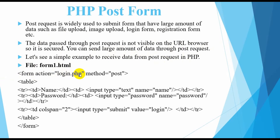Let's see a simple example. The form action is login.php and the method is equal to POST. We have a table with two rows: the first field is name, and the second is password. For the password field, input type is equal to password. The name attribute is set accordingly for both name and password fields. Then we have a submit button.